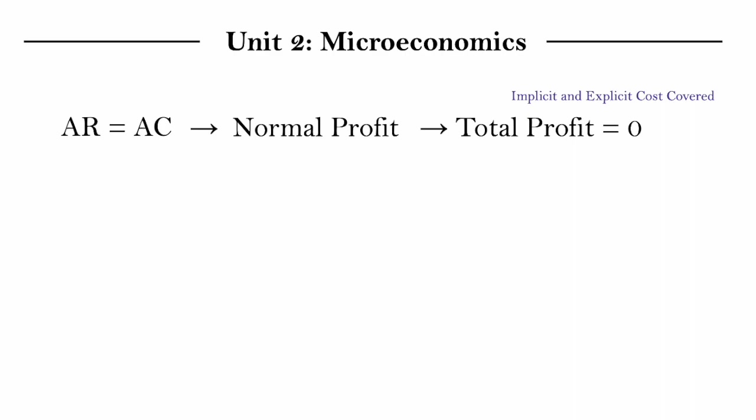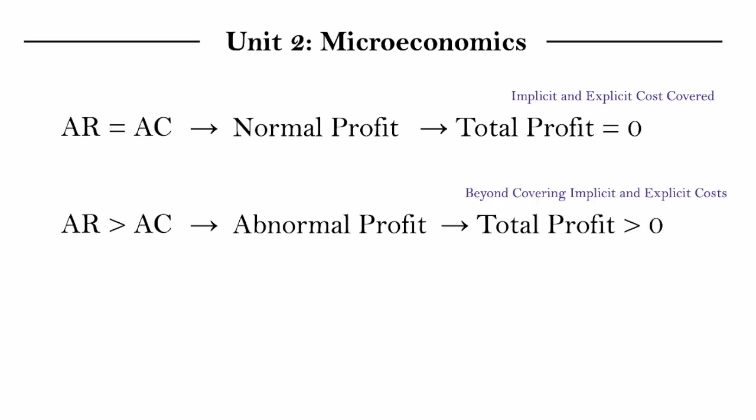And then we have when AR is greater than AC, we make abnormal profit, total profit is greater than zero, and we're earning beyond covering implicit and explicit costs.